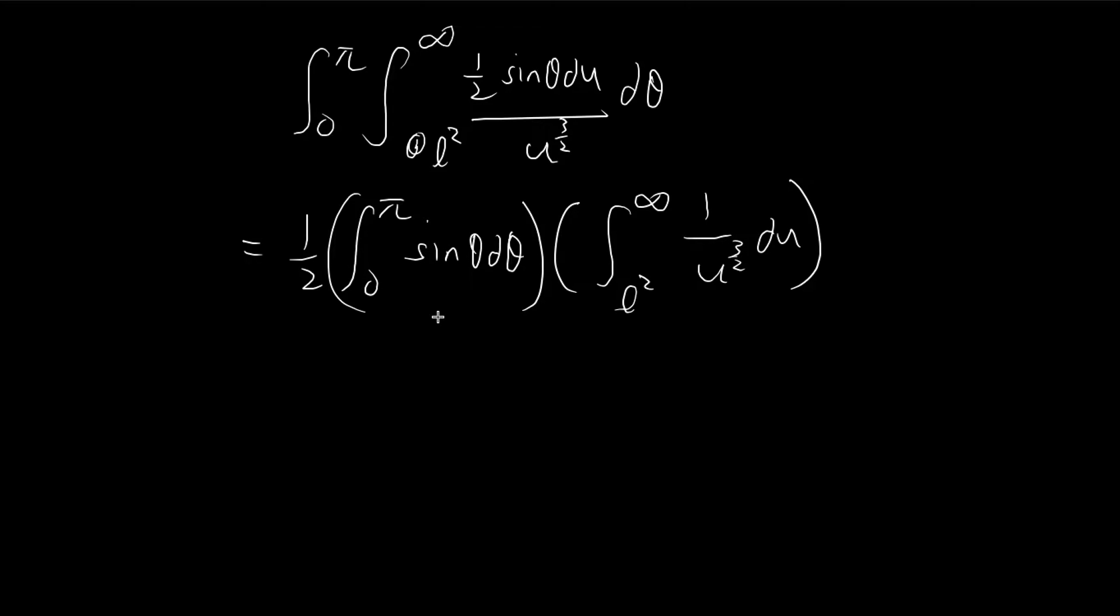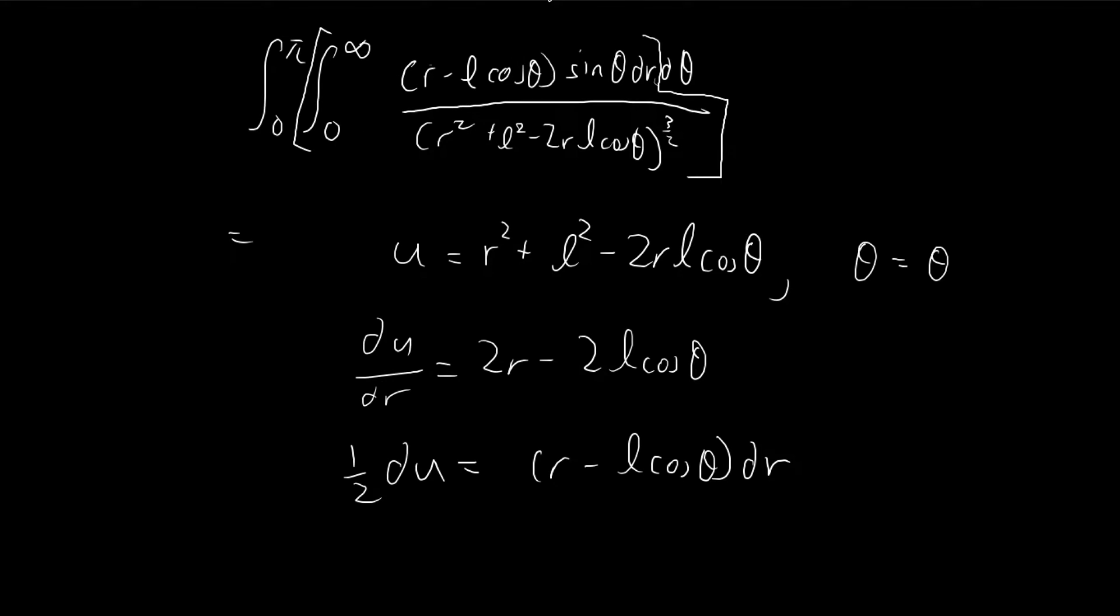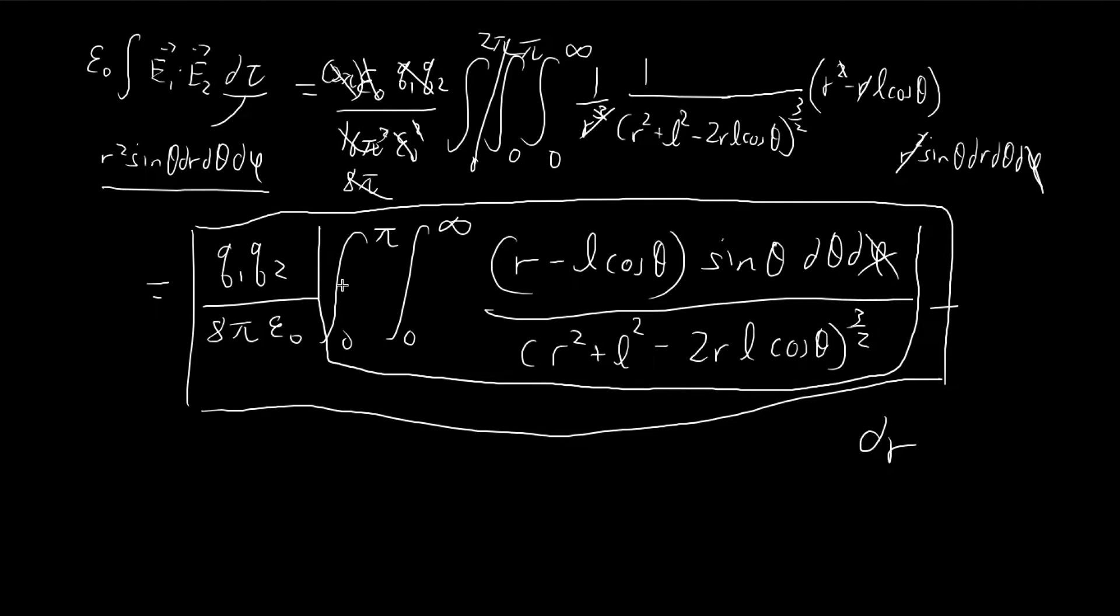So this expression here, that's equal to two. So it cancels out that. So we can just ignore all this. So integrating that, that's equal to negative two. So substituting infinity, that's zero. So we get two over square root of l squared, which is two over l. So this whole integral here is just equal to two over l.